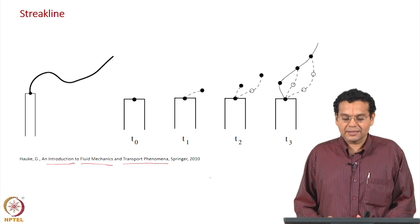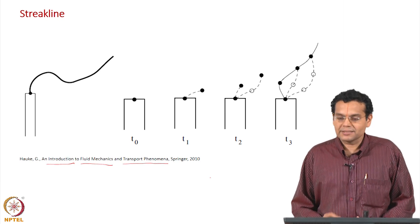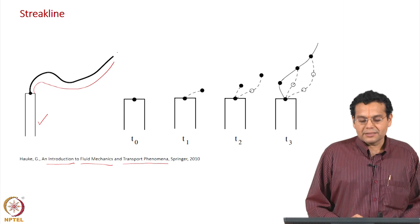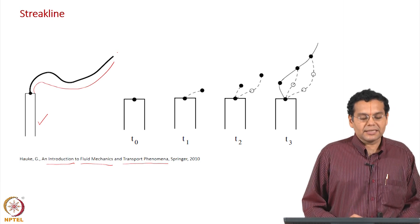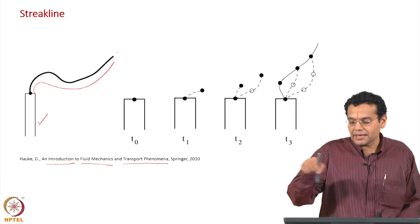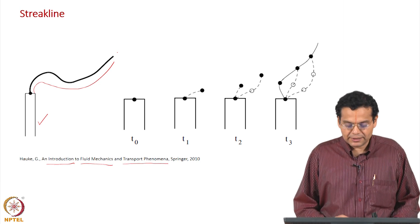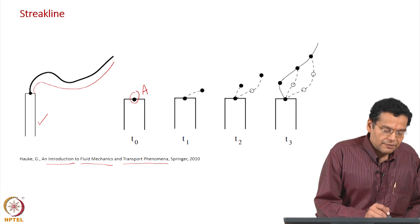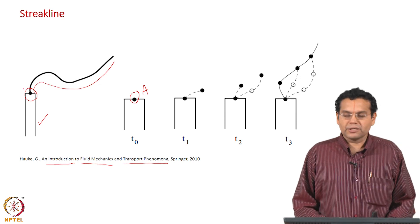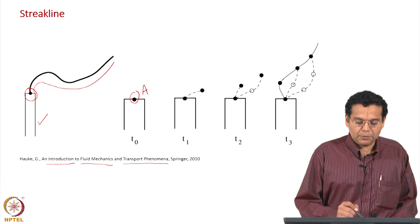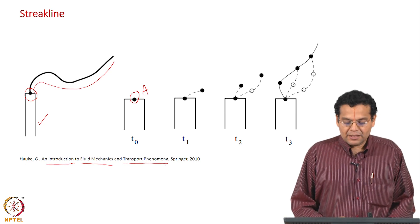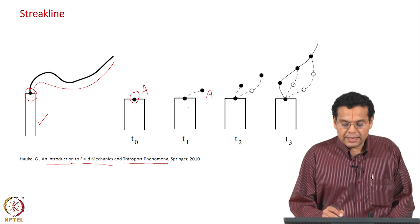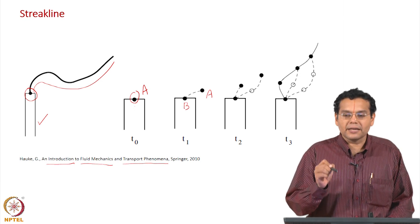Streak lines are slightly difficult compared to stream lines and path lines. What is shown here is something like a chimney with smoke coming out of it. Smoke coming out of a chimney is an example of a streak line, or if you inject dye into a region, that is also an example of a streak line. What is shown here is a particle — let us call it particle A — and this is our point of focus. This particle is at this position at time t-naught. At the next time t1, the particle has moved, and another particle B enters at the same location.